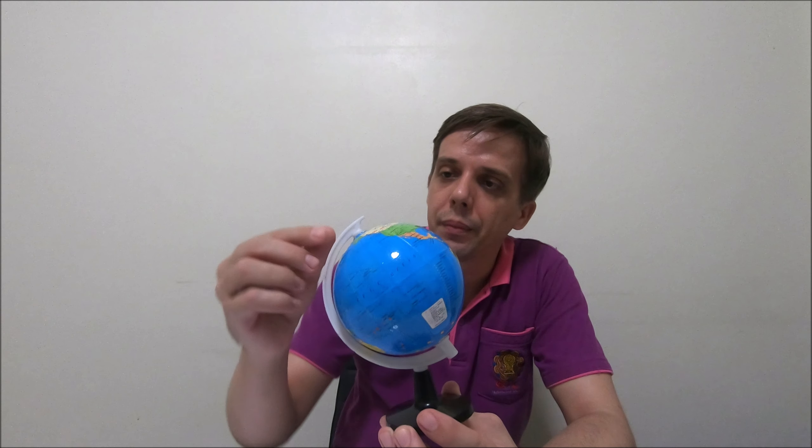It takes 24 hours for our Earth to make a full rotation. 24 hours, which means one day. This is one of the reasons why we have day and night on the Earth.